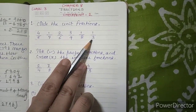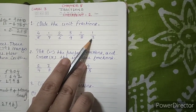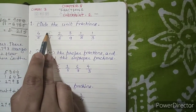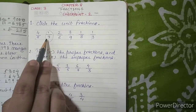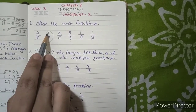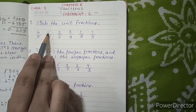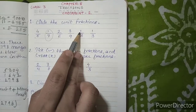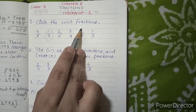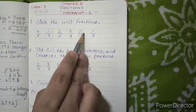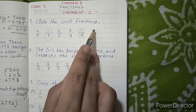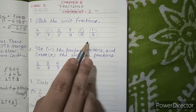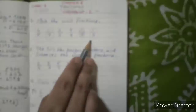Now we have to circle the unit fractions. As we can see, 1 by 7 is a unit fraction because 1 is the numerator. Then 1 by 8 is also a unit fraction, and 1 by 3 is also a unit fraction.